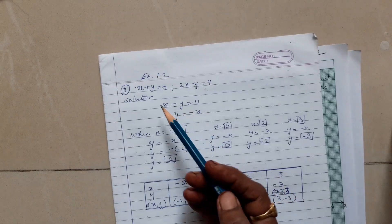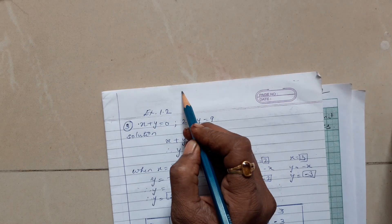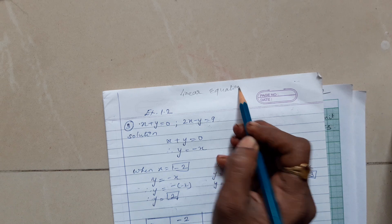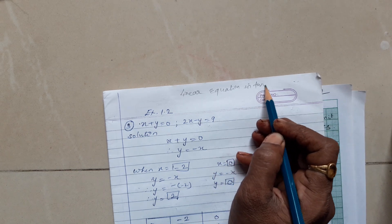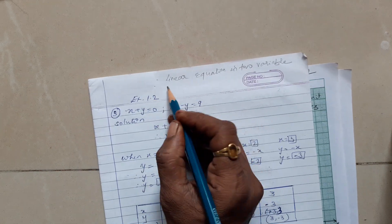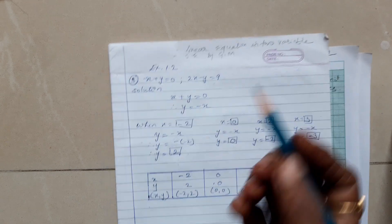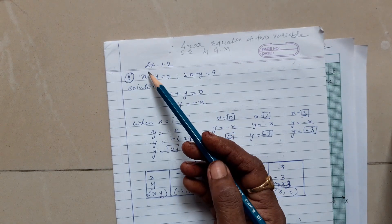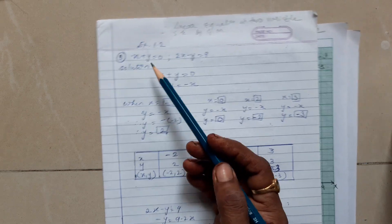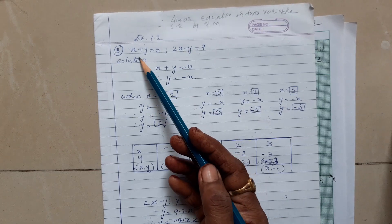Okay students, now let us see sum number 3 from Exercise 1.2. We are studying the topic 'Linear Equations in Two Variables', and the first topic from that is the solution of simultaneous equations by graphical method. Today we will do Exercise sum number 3 from Exercise 1.2 — we have to solve the simultaneous equations by graph.